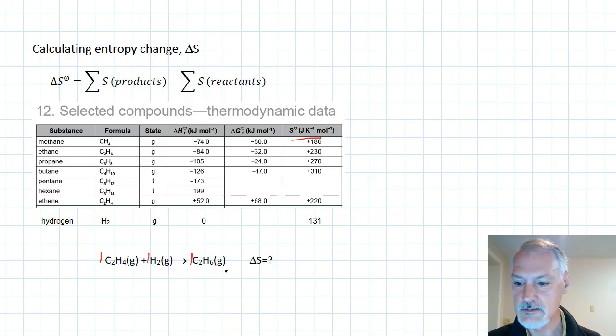Let's write down the values underneath each substance, just to organize ourselves. So I consult the table, first of all, for C2H4, ethene. So this is 220. Now hydrogen, I had to look that one up, is 131. And ethane is 230.